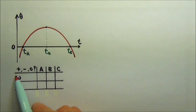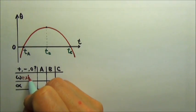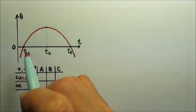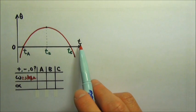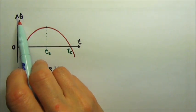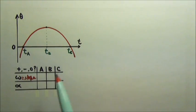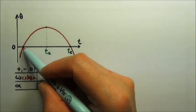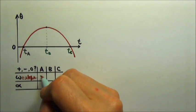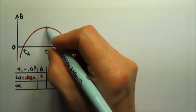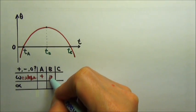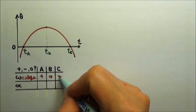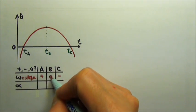Angular velocity is the slope of the angular displacement as a function of time graph. So at moment a the slope is positive, at b the slope is zero, and at c the slope is negative.